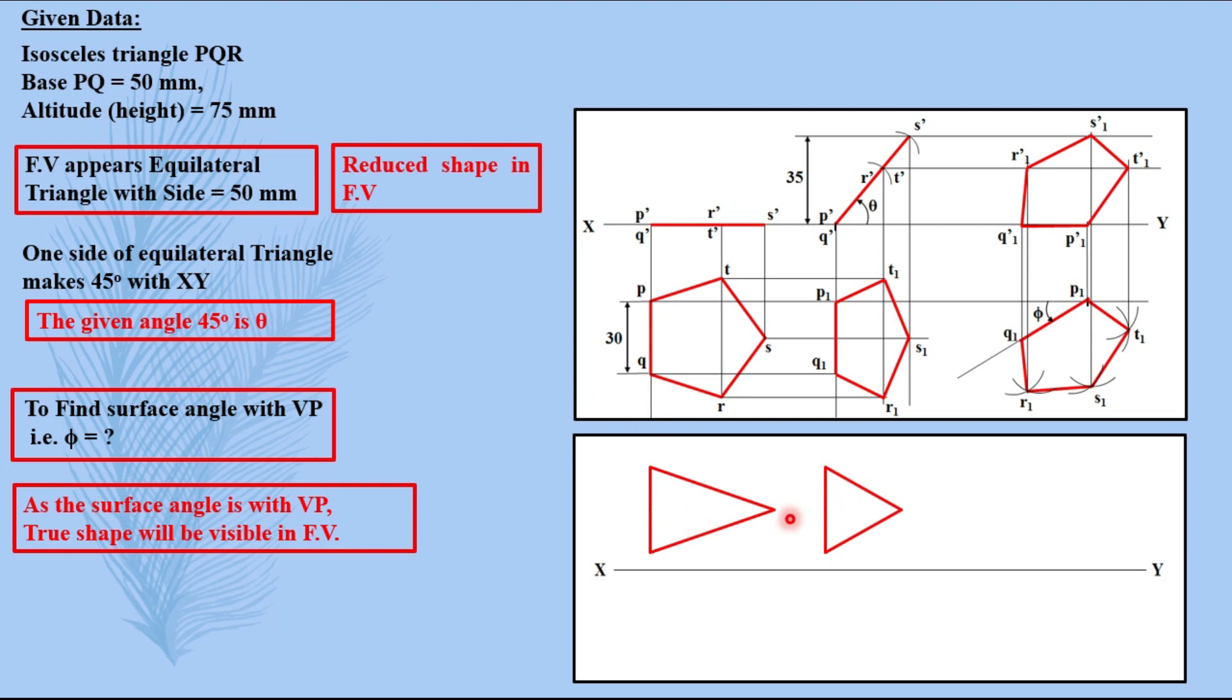In this, why we have selected position like this? In every question where reduced shape is mentioned, remember that whatever size of reduced shape is mentioned, that is 50 mm in our question, this dimension always matches with one of the dimension given in the question as original true shape.